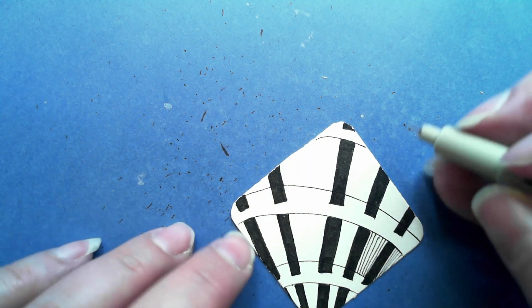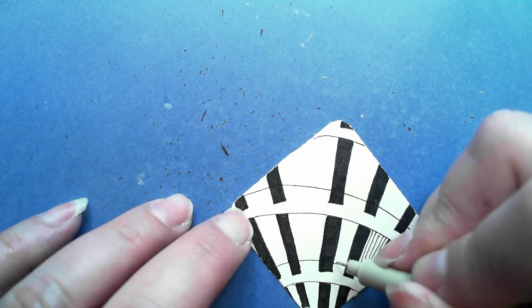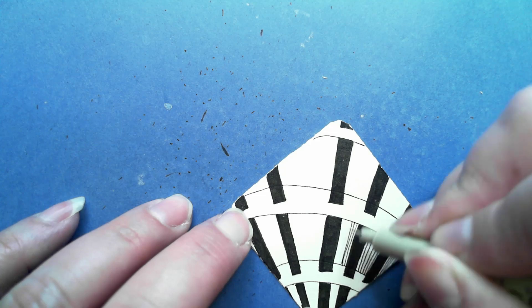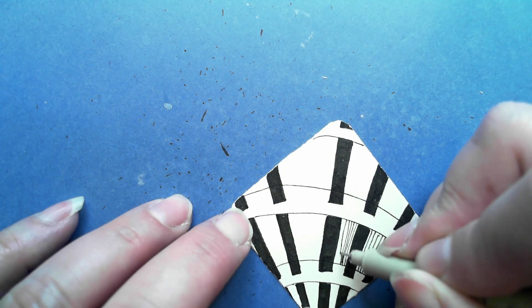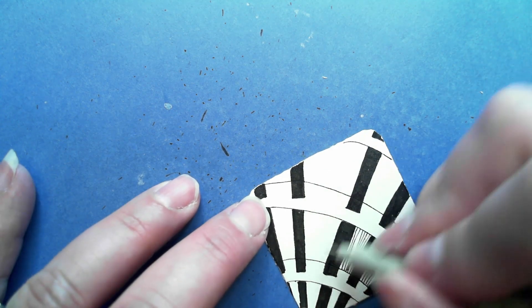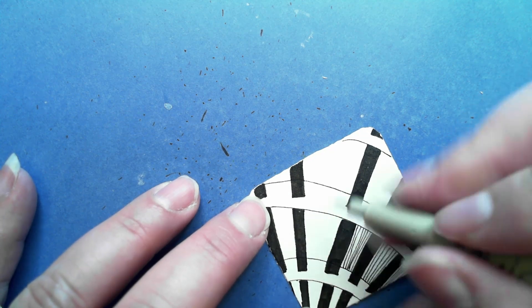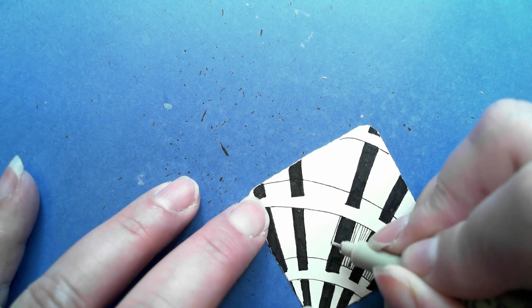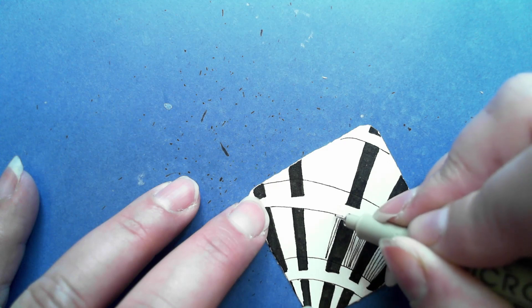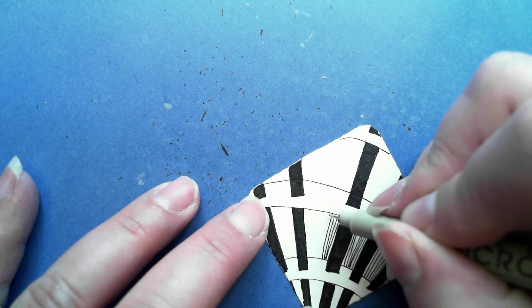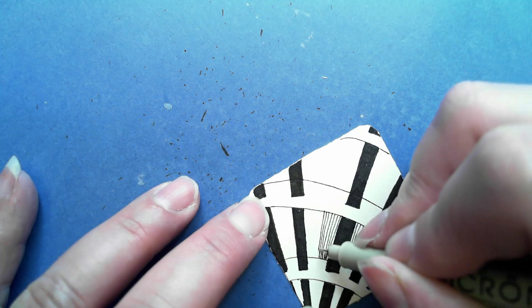Now, the thing to be aware of is this is kind of wet and I'm trying to use actually my nails because I don't want to smudge any of the ink anywhere. One thing that you might have to do, depending on how your curves are, is you might have to adjust these straight lines.